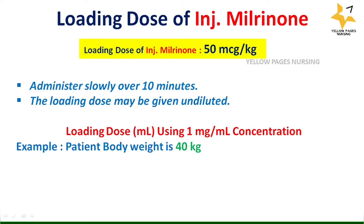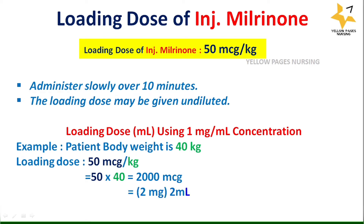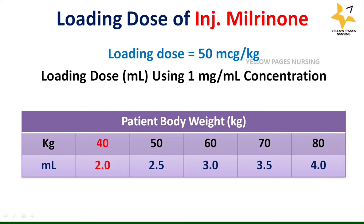Patient's body weight, for example, is 40 kg. Loading dose is 50 microgram per kilogram. Therefore, 50 multiplied by 40 gives 2000 microgram, and hence 2 mg — that is 2 ml — will be administered. Now take a look at this table for loading dose of injection milrinone calculated with various body weights as examples.